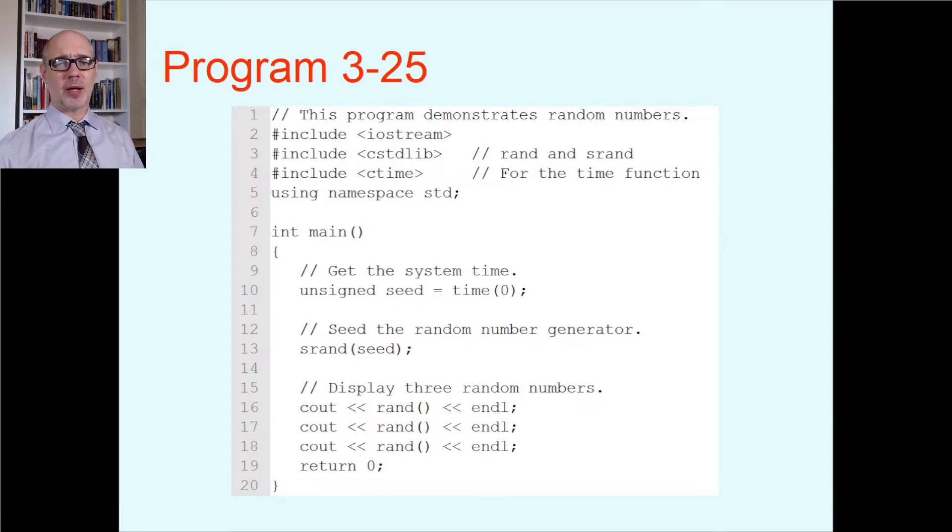Here's an example program of this, program 325 in the book. This program demonstrates random numbers, very simple. And you can see we've got, we're including iostream for cin and cout. We had to include the C standard library for rand and srand. And we're also including ctime to get the current clock time as the very first thing we put into the pseudo-random generator. And I guess they're doing this in two separate steps here. They're calling the time function to get the current time, putting that in a variable called seed. That's actually an unsigned int. Once they've got that number in seed, they pass that into the random seed function. And then on line 16, 17, 18, they're going to call rand once, twice, a third time. And hopefully these would be three different, hopefully unpredictable numbers.